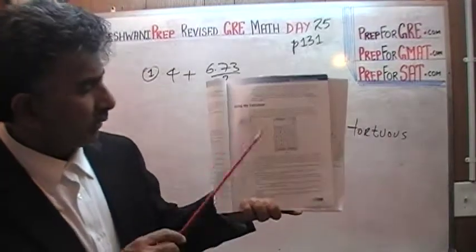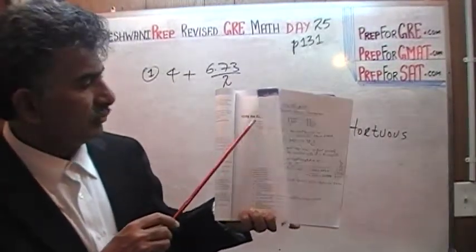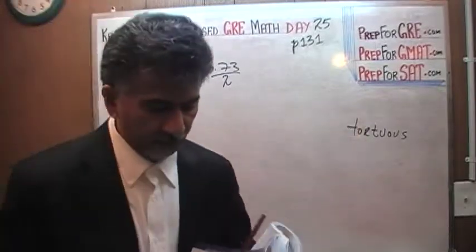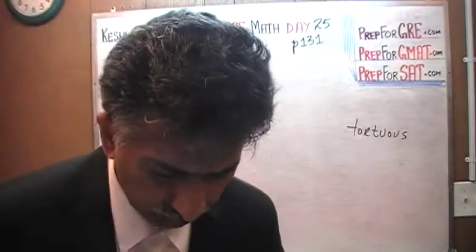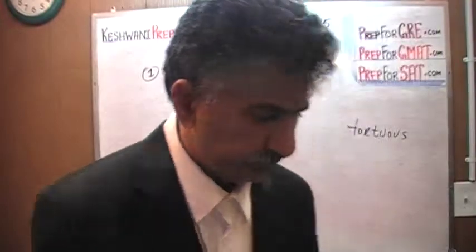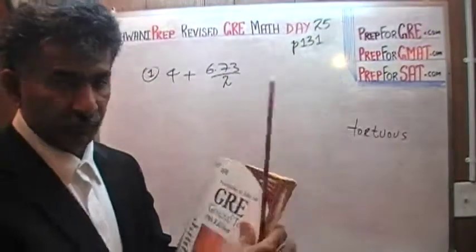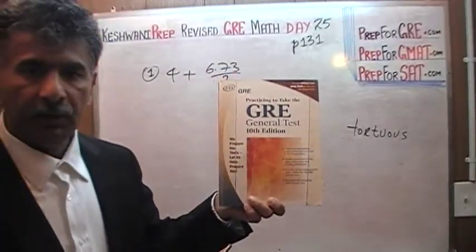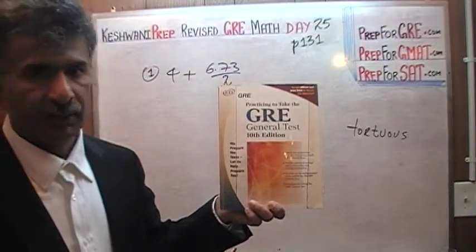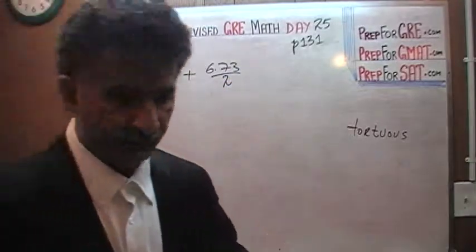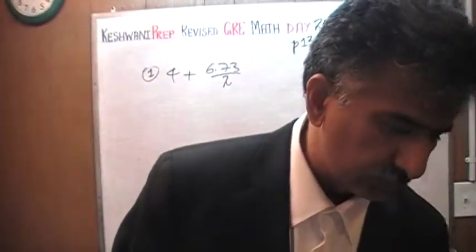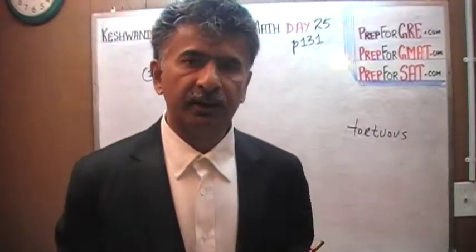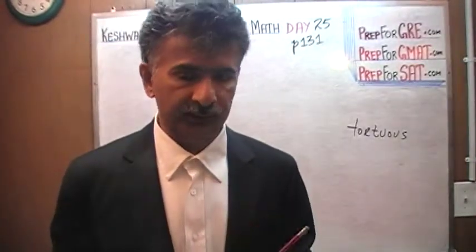On page 129, they discuss using the calculator. Back in the old days, in the old version of the GRE — the 10th edition — calculators were not allowed. Nowadays they do allow it, but only the calculator that they provide you on screen.